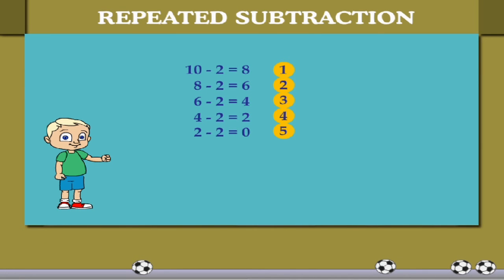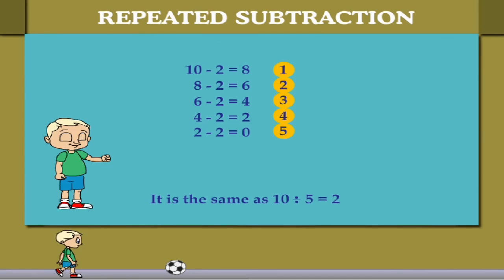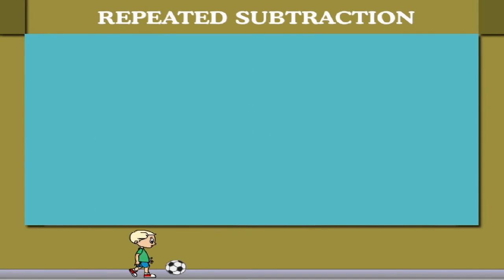Repeated Subtraction is Division. 10 divided by 5 is 2.